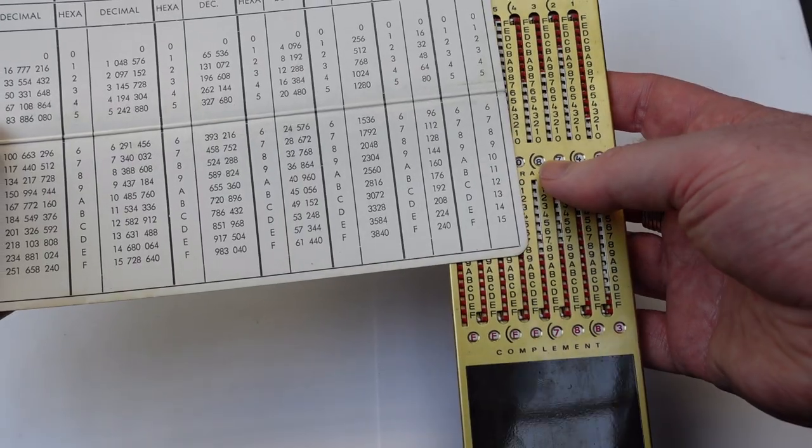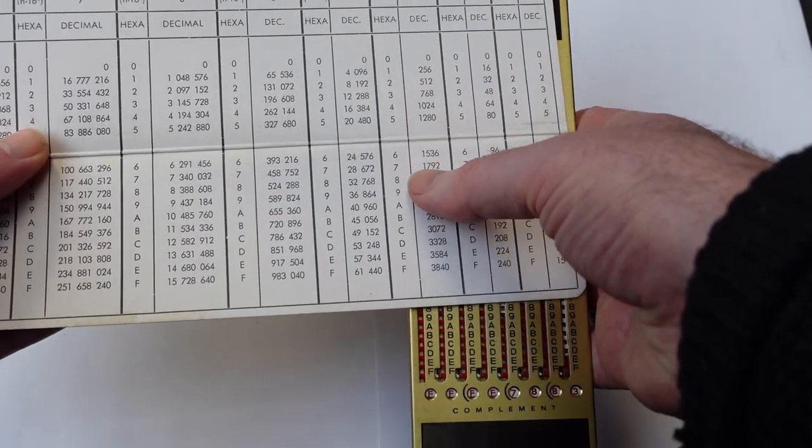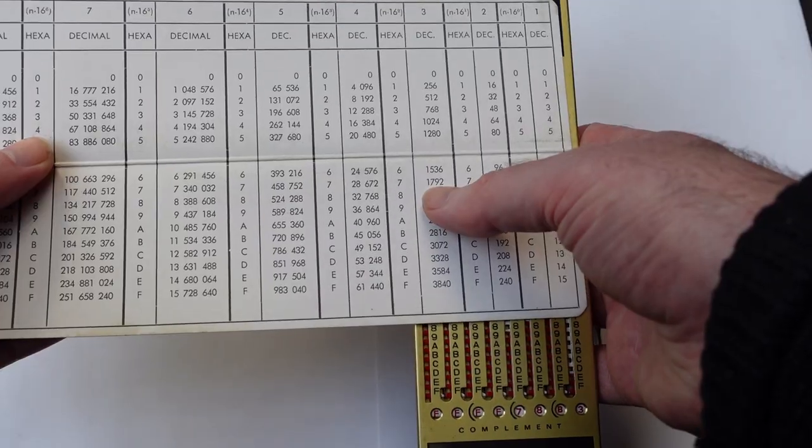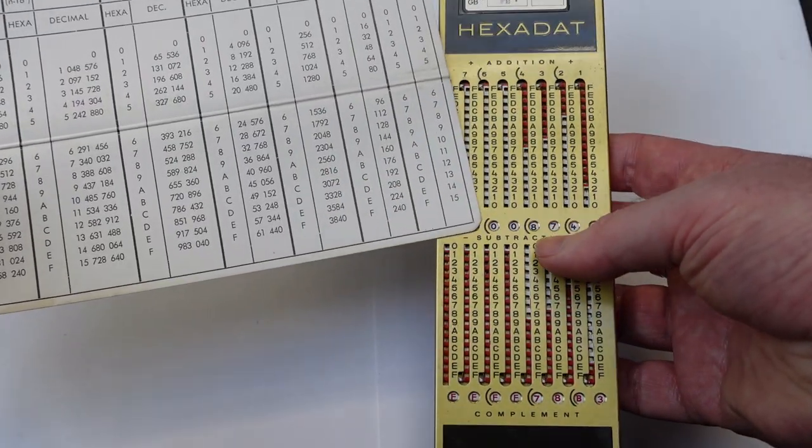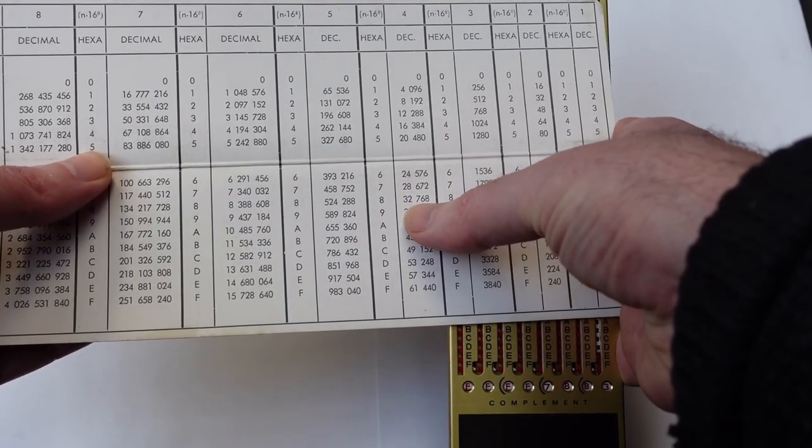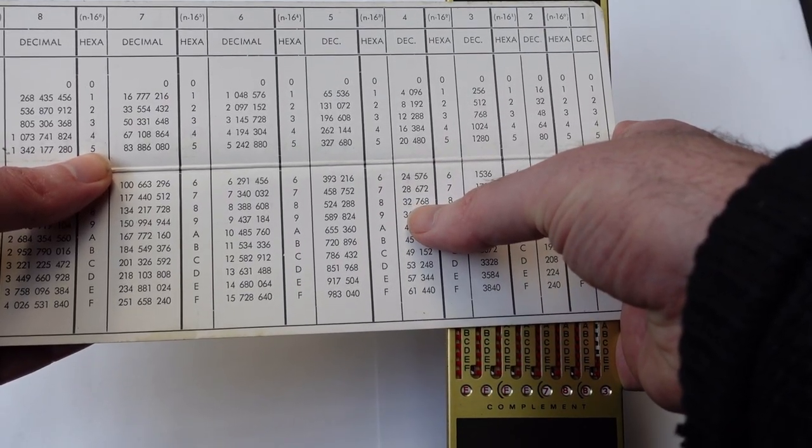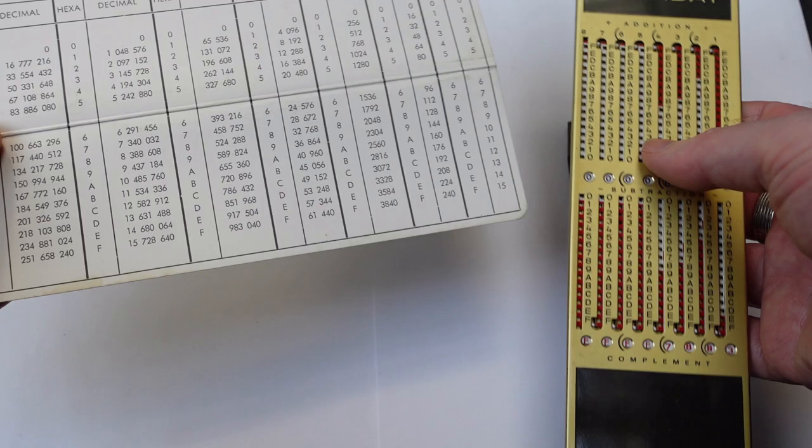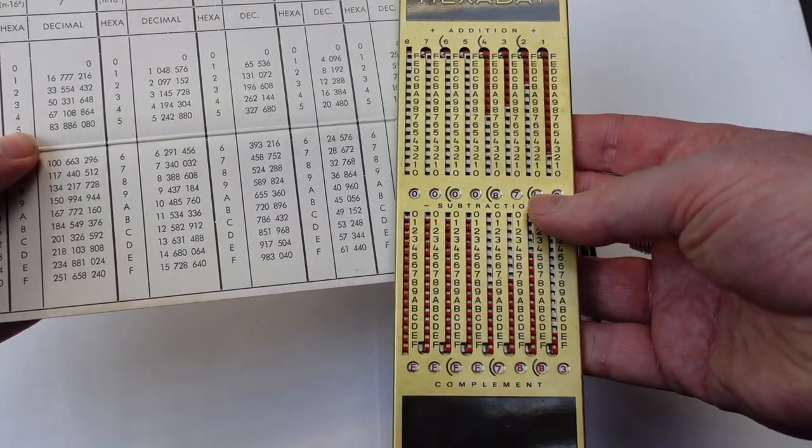And then the next column is a 7, so that's 1792. I'd have to add that. And then add up whatever the 8 is here in the fourth column, 32768. Add those numbers together, then you get whatever this is in decimal.